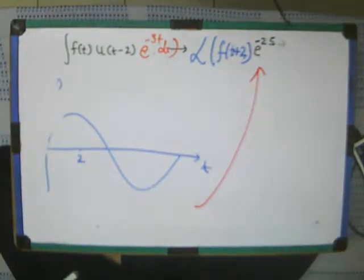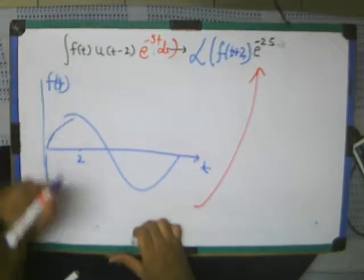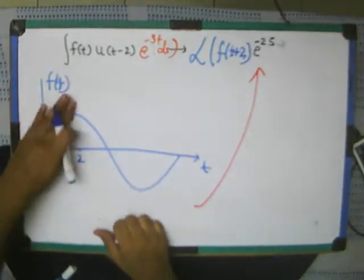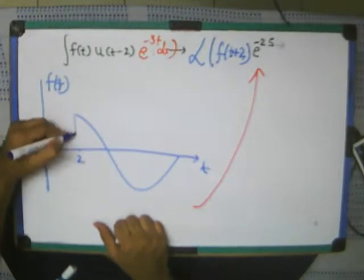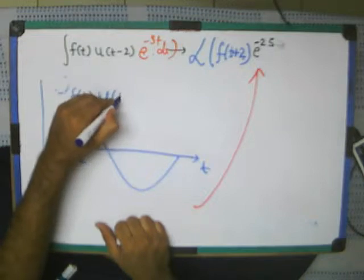So, let me, if I take this function, suppose F of t, okay, something like this. Now, F of t, u of t minus 2. This means this much, this is F of t, u of t minus 2.